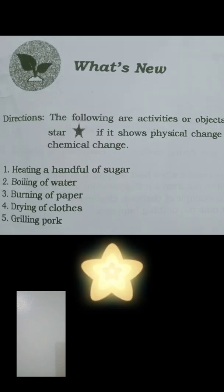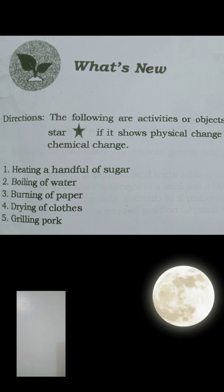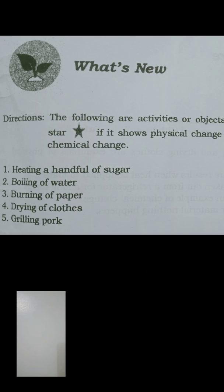What's New? Directions: The following are activities or objects where heat is applied. Draw a star if it shows physical change or a half moon if it shows chemical change. Number 1: Heating a handful of sugar. Number 2: Boiling of water. Number 3: Burning of paper. Number 4: Drying of clothes. Number 5: Grilling pork.